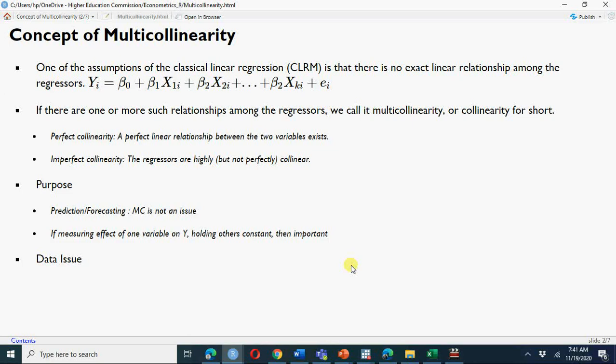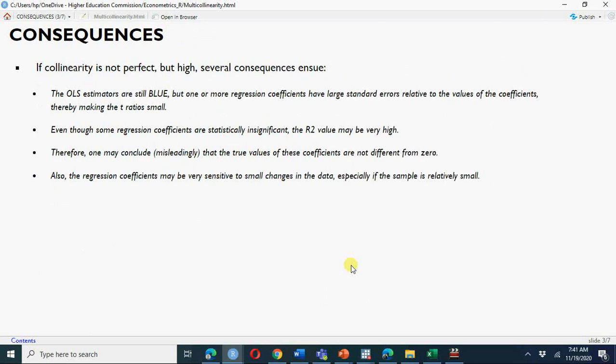What are the consequences of multicollinearity? Your estimators are still best linear unbiased. But what do we mean by best? There is no small magnitude in absolute sense. You can have very large magnitude of variance but still it's best.